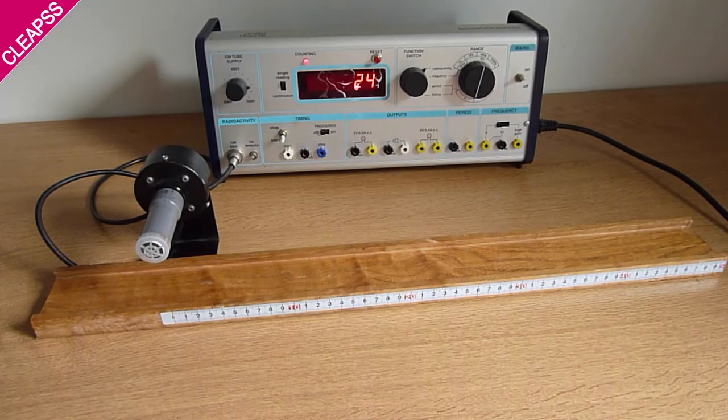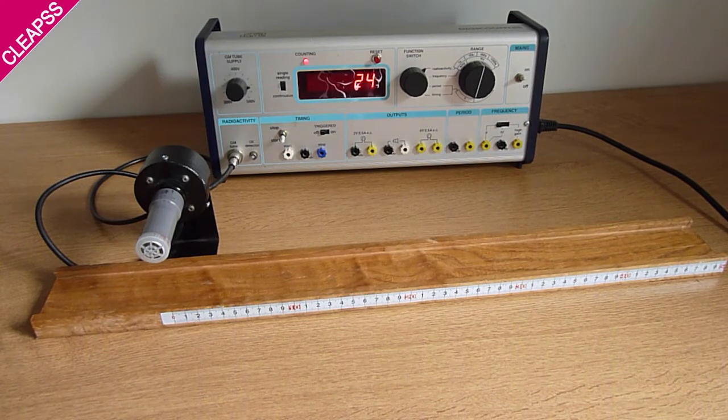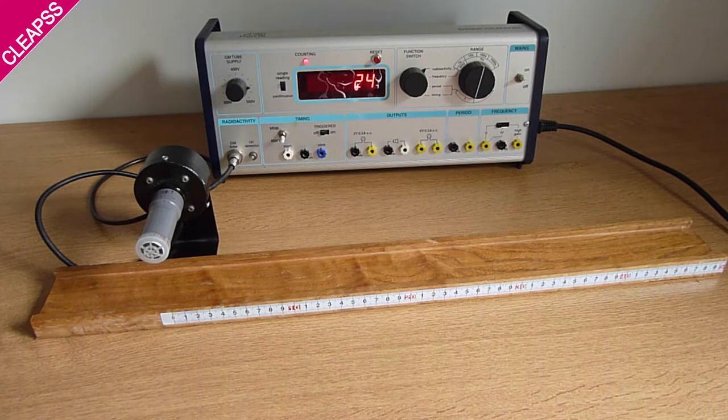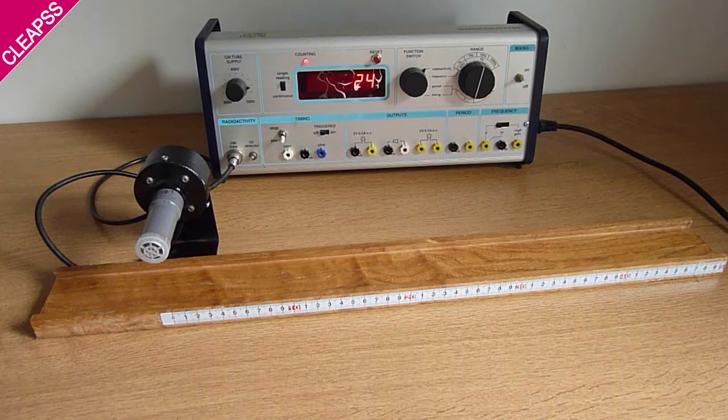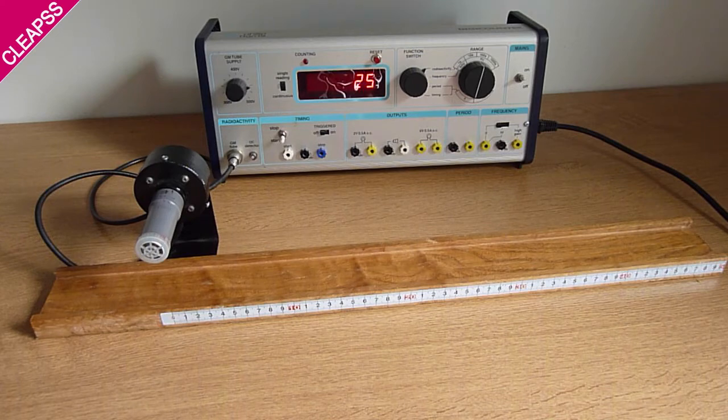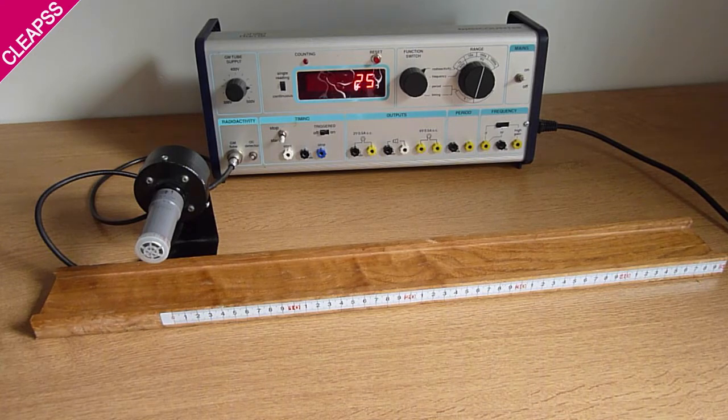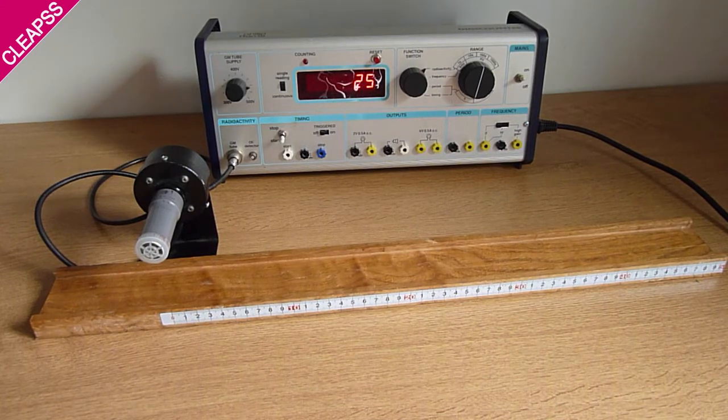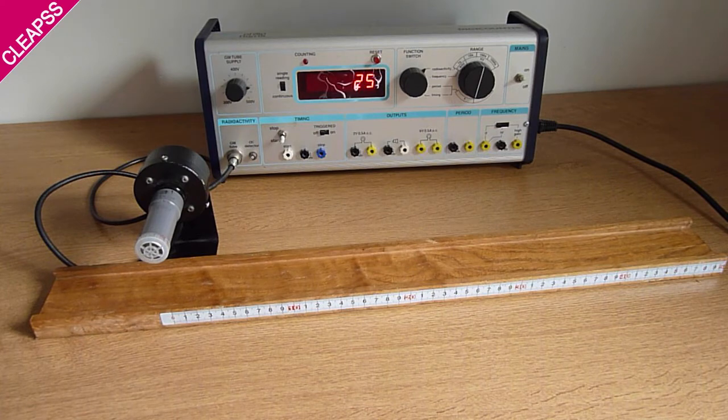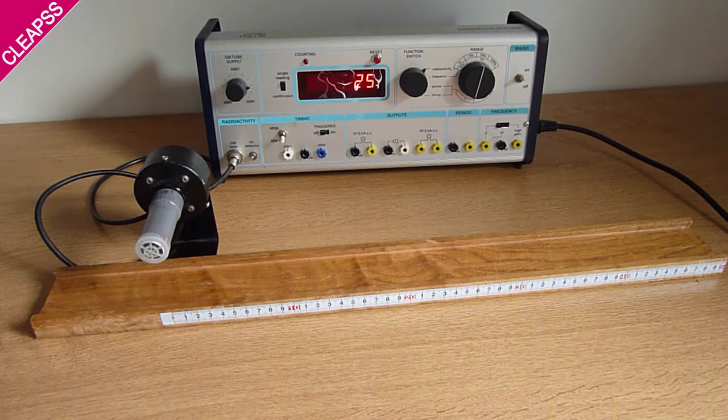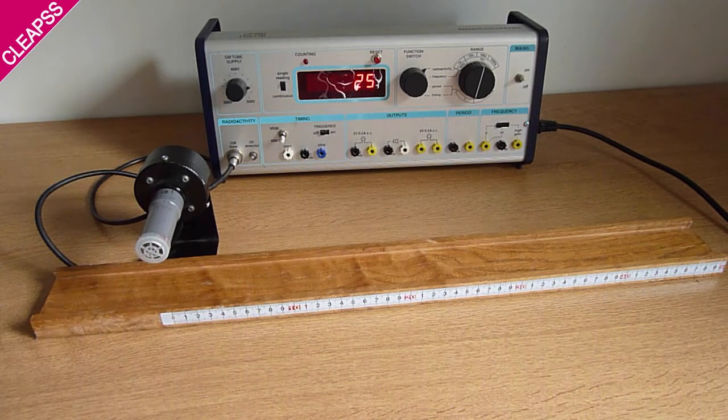The equipment I have here is to demonstrate the inverse square law. I'm going to use it to show you handling an isotrack rod source. At the moment, I'm taking background over 100 seconds, and the background count is 25. As you can see, I'm using a radioactivity bench. This is a purpose-made apparatus for holding the GM tube holder, the source and other equipment, such as absorbers. This is important.